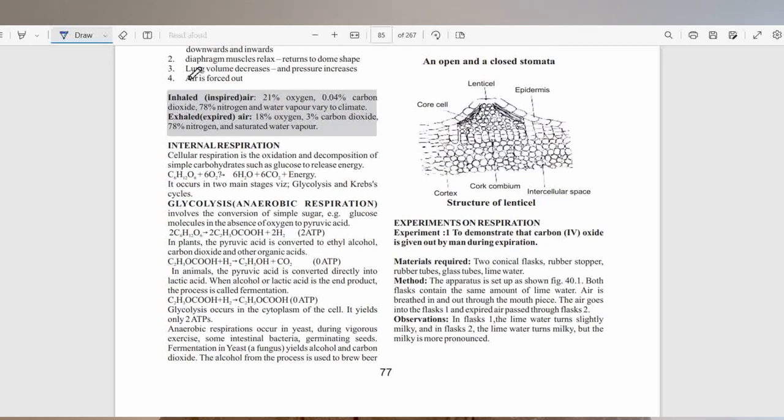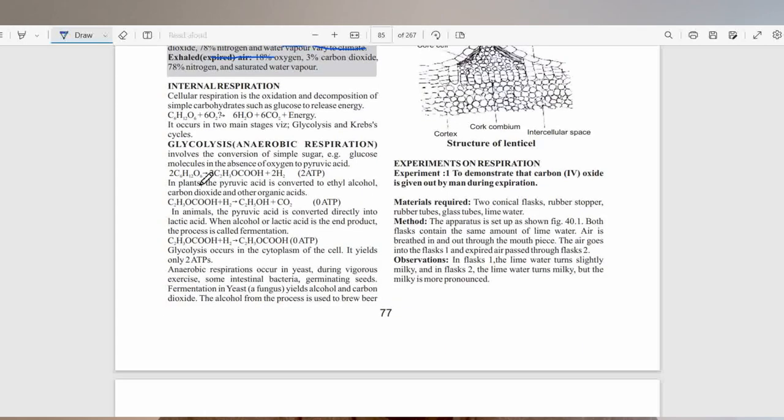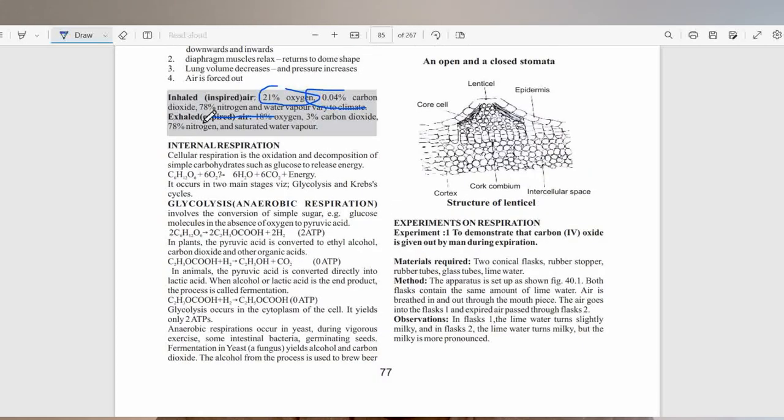When you inhale, you are inhaling air, which is a mixture of gases. Within that mixture, it contains 21% oxygen, 0.04% carbon dioxide and 78% nitrogen, which is inert. This percentage composition could vary depending on the environment and in case of pollution.